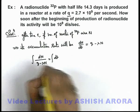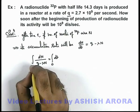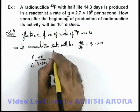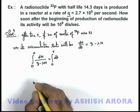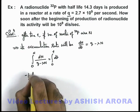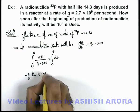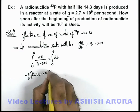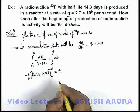We can integrate the expression. At t = 0, the number of nuclei was 0, and at time t, these are N. On integrating, we'll be getting -1/λ ln(q - λN), and we can apply the limits from 0 to N. This is equal to t.